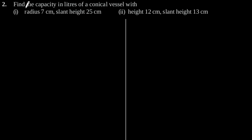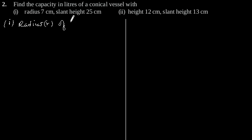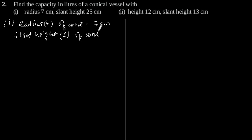Exercise 13.7, question number 2: find the capacity in liters of a conical vessel. First, radius r of cone is equal to 7 cm, slant height l of cone is equal to 25 cm.